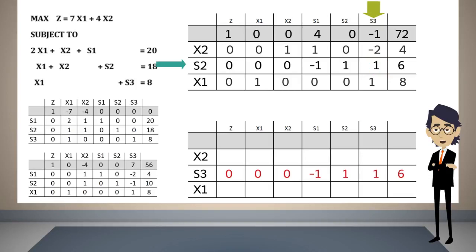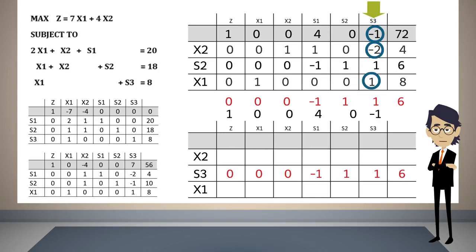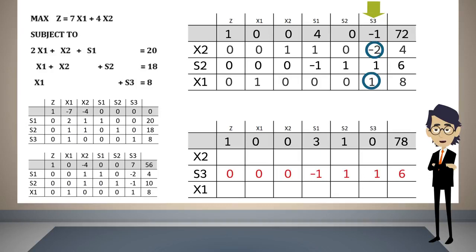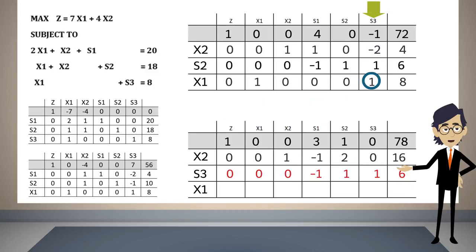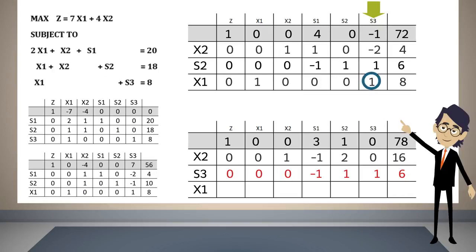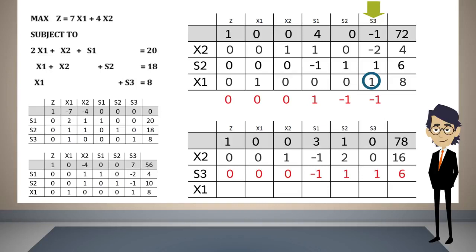Our new basic variables will be x2, s3, and x1. The number at the intersection of the entering and leaving variables is one, so we move this row dividing by one. We convert the other elements in the s3 column to zeros. We multiply by one the pivot row and add it to the objective function row to get the new objective function row. We multiply by two the pivot row and add it to the first constraint row. Finally, we multiply by minus one the pivot row and add it to the third constraint row.